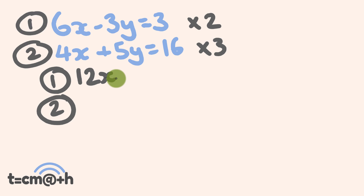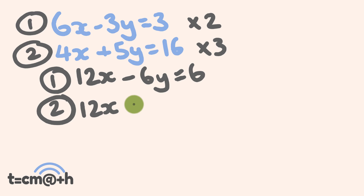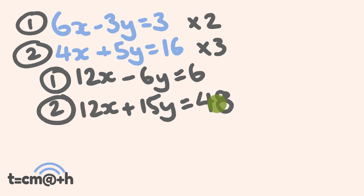We would multiply equation 1 by 2 and equation 2 by 3 if we're looking at the coefficients in front of x. So equation 1 multiplied by 2: 2 times 6x is 12x, negative 3y times 2 is negative 6y, and that is equal to 3 times 2 which is 6. Equation 2 multiplied by 3: 3 times 4x is 12x — matching just like we'd hoped — 5y times 3 is positive 15y, and that is equal to 16 times 3 which is 48. Now we've got that matching part of the 12x's — they're going to end up eliminating each other.